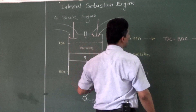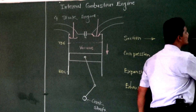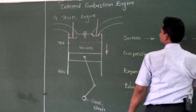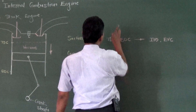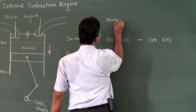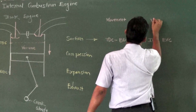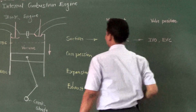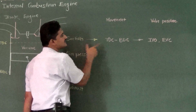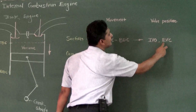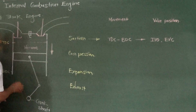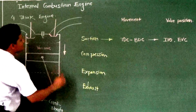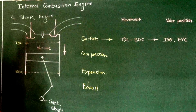In the suction process: the inlet valve is open and the exhaust valve is closed. The piston moves from TDC to BDC. So in the suction stroke, vacuum is generated above the piston, the inlet valve is open — meaning there is communication with the outside atmospheric pressure — and the piston moves from TDC completing the suction stroke down to BDC.